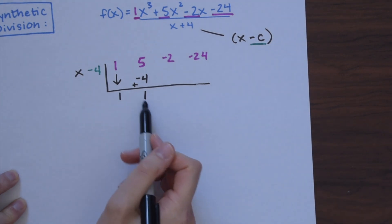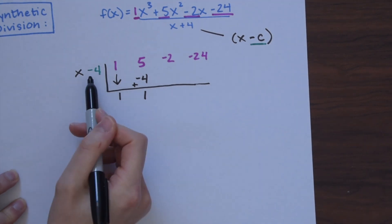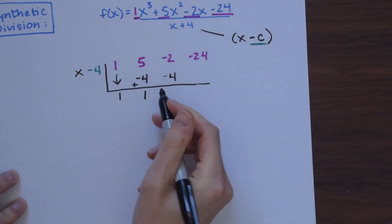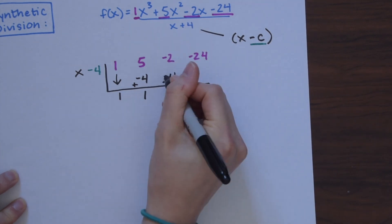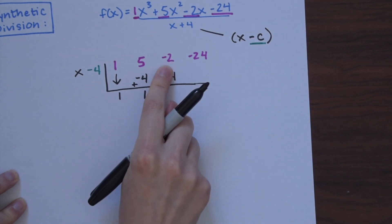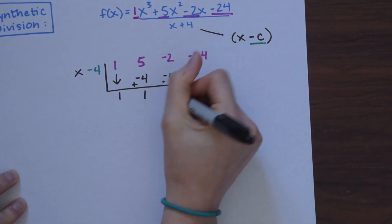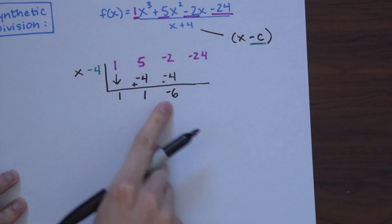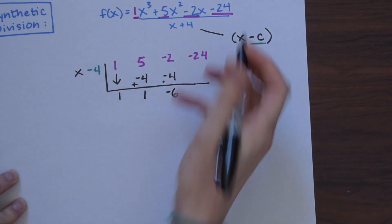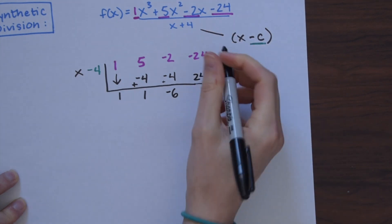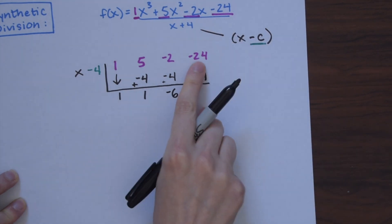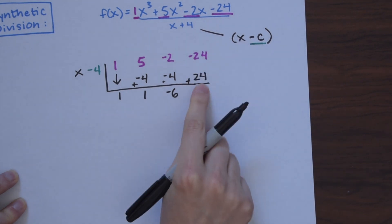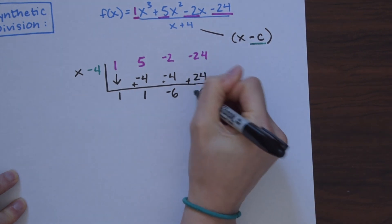We do the same thing — it's a pattern with synthetic division. So 1 times negative 4 gives us negative 4, and then we add: negative 4 plus negative 2 gives us negative 6. Then negative 6 times negative 4 is 24. Now we add: negative 24 plus 24 gives us 0.